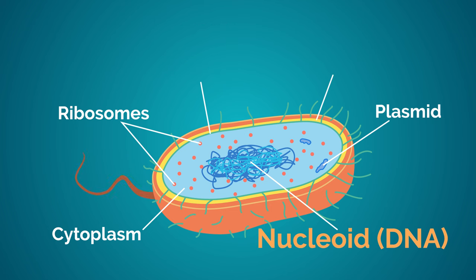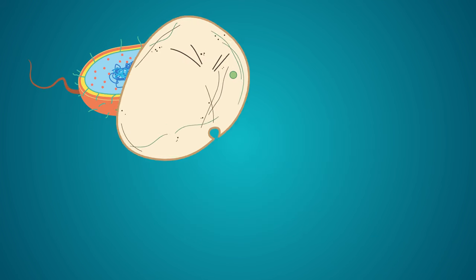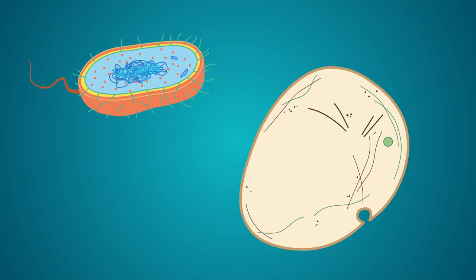Prokaryotes were the first type of organisms to evolve and are still the most common organisms today. It is believed that eukaryotes evolved from prokaryotes.